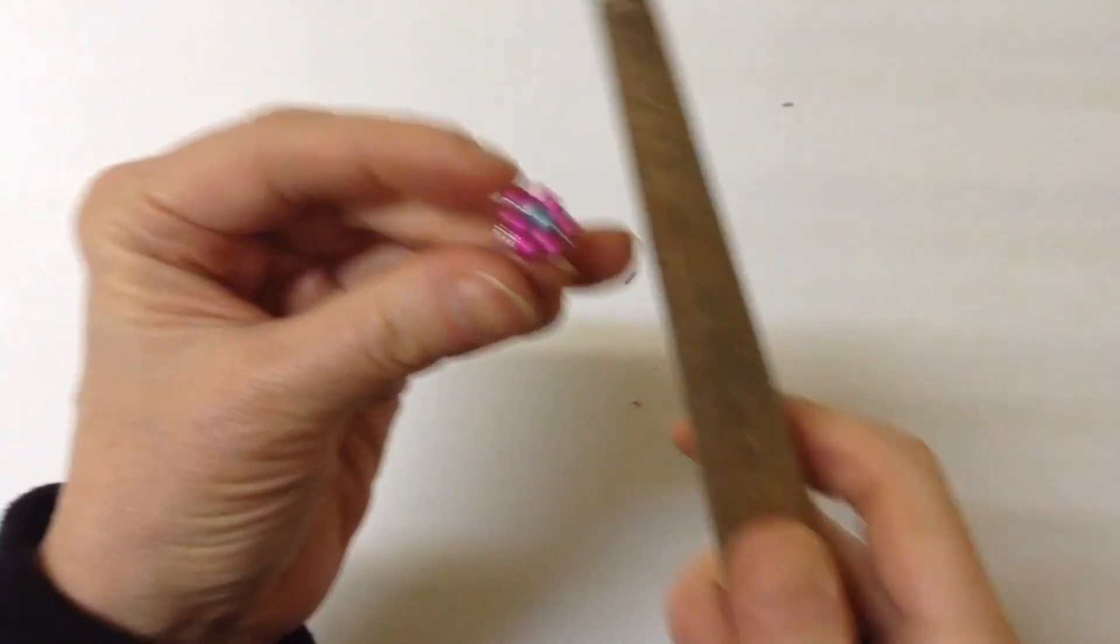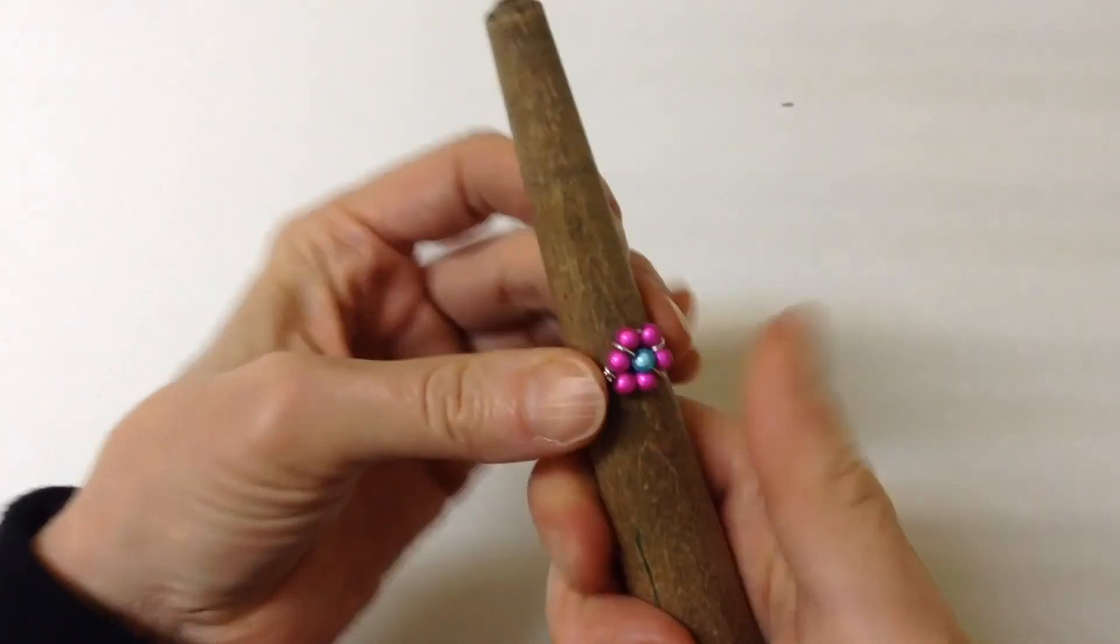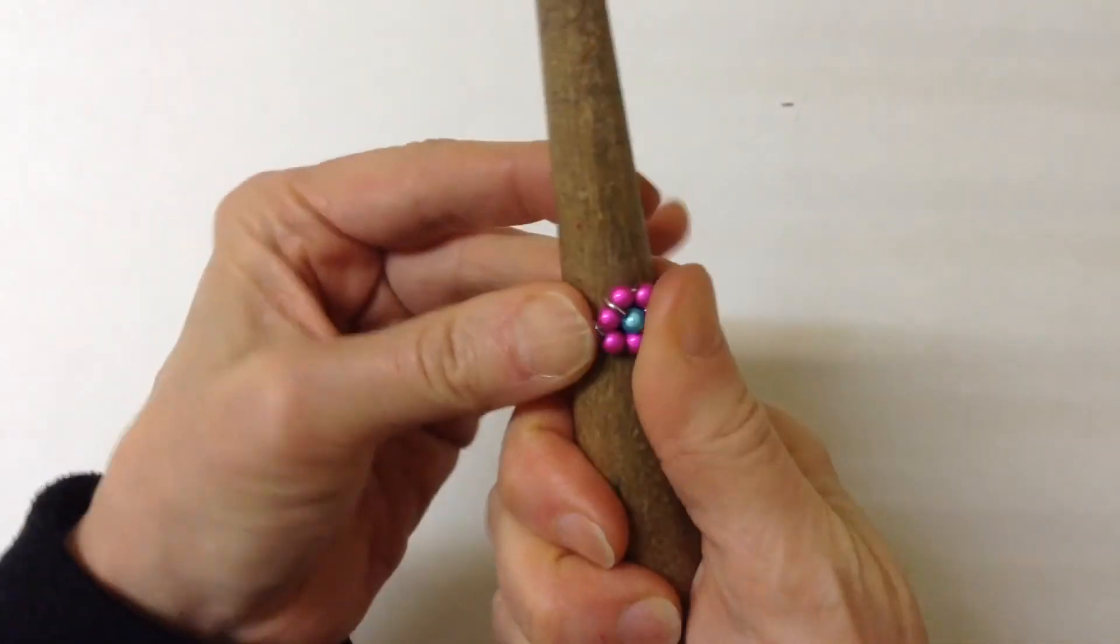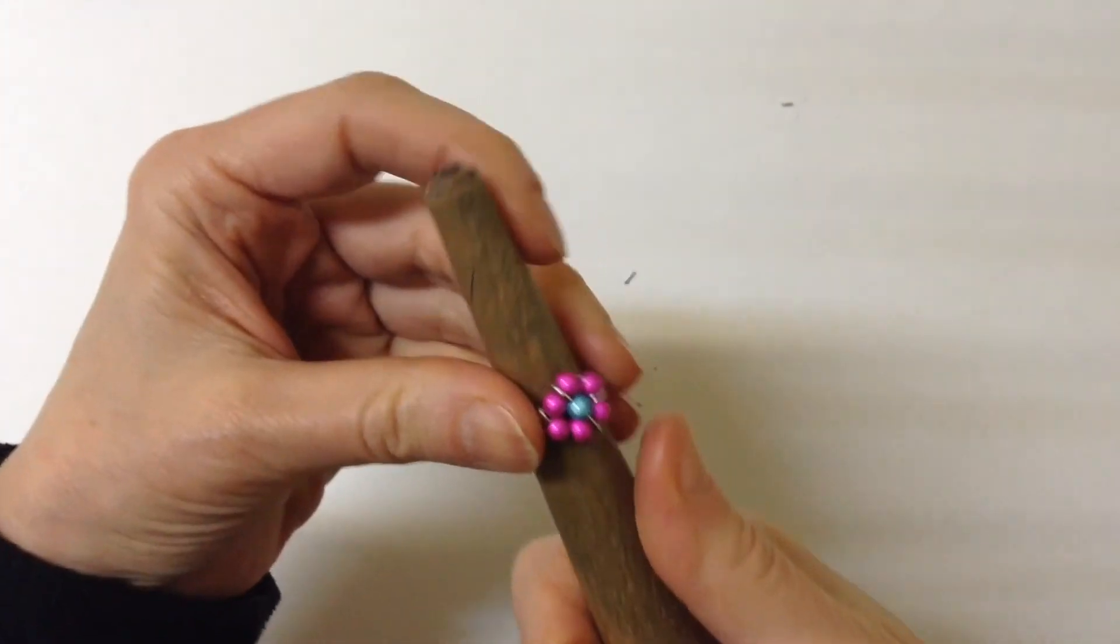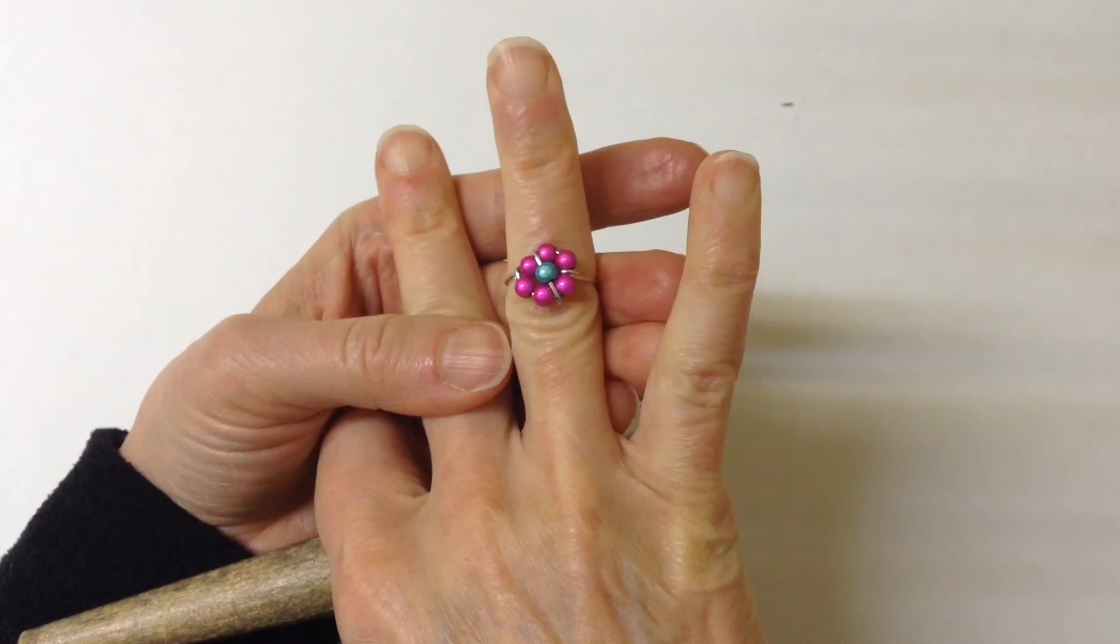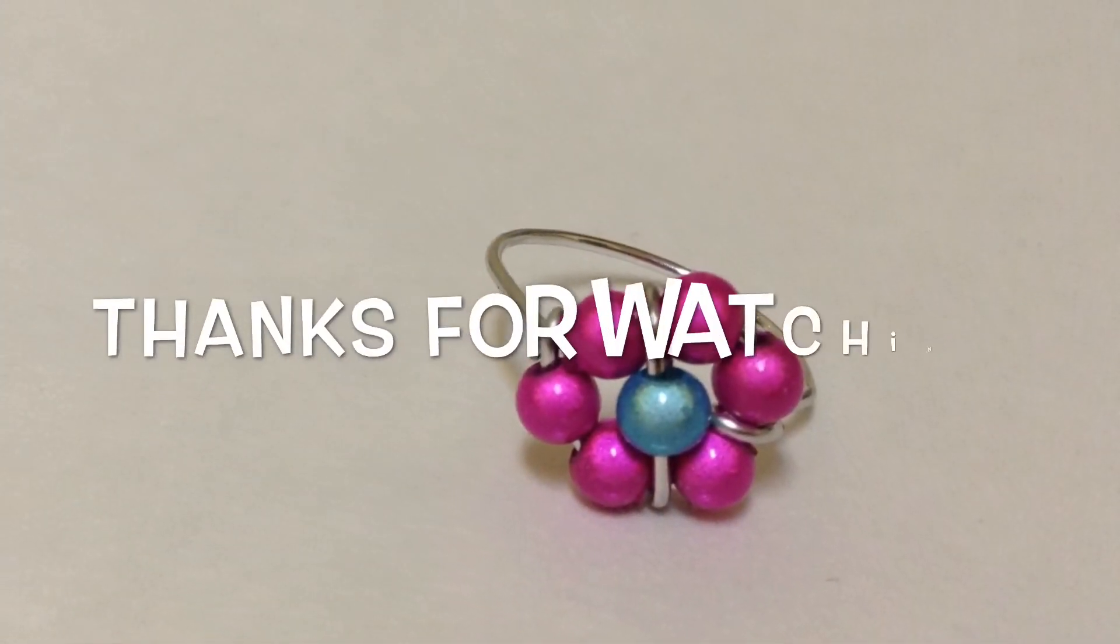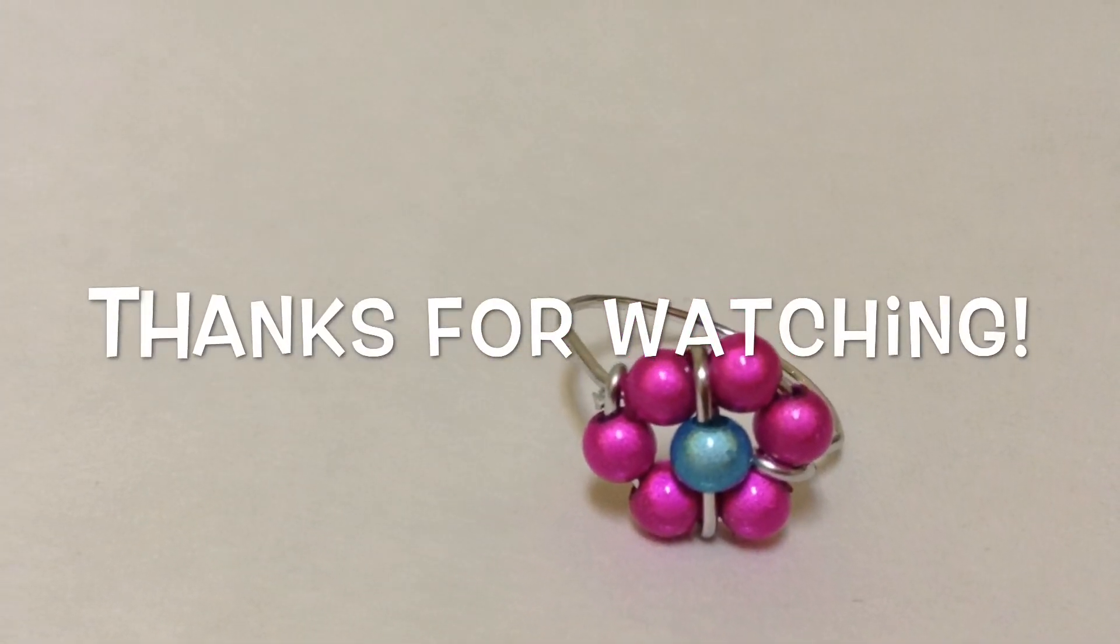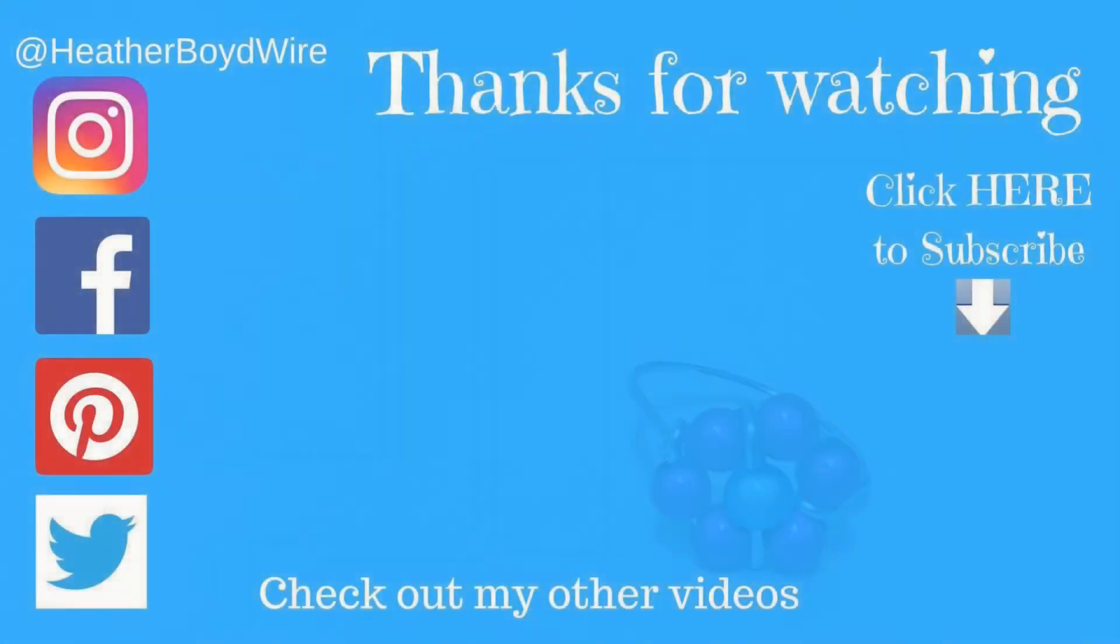And then you can get your ring form back and adjust it so it's perfect. And there you have your little daisy ring.